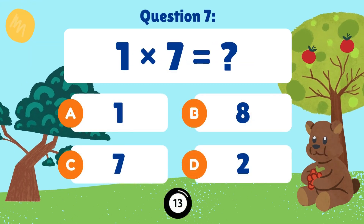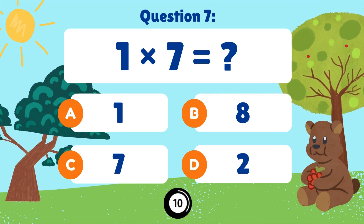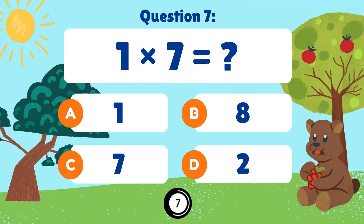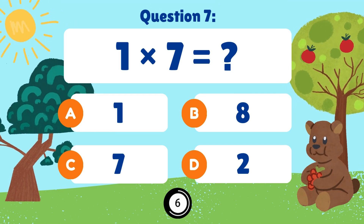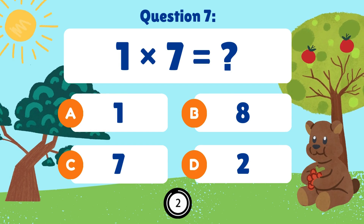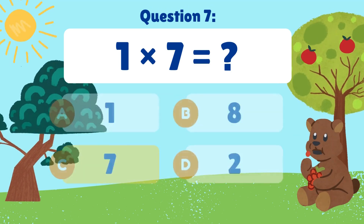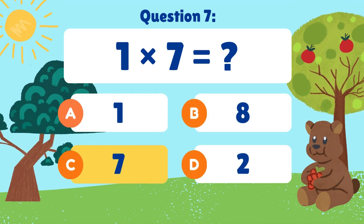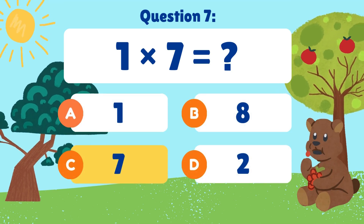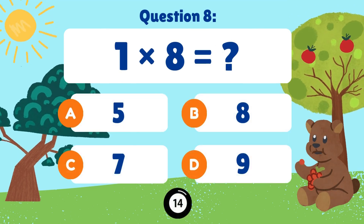1 times 7 is equal to. 1 times 7 is equal to 7. 1 times 8 is equal to.